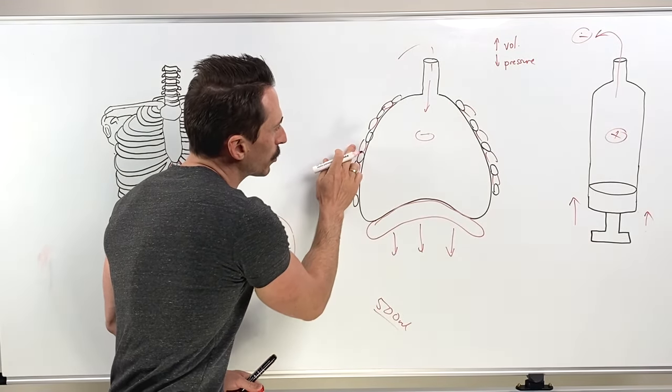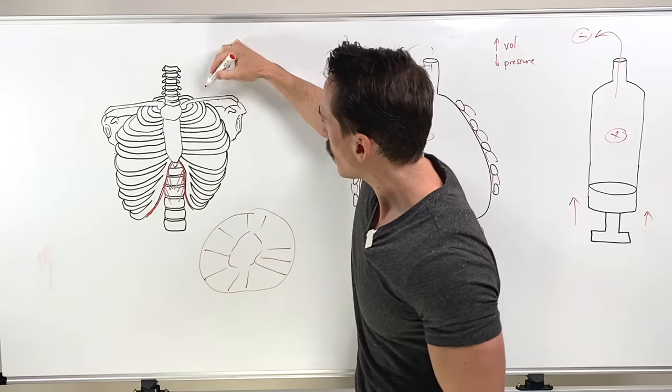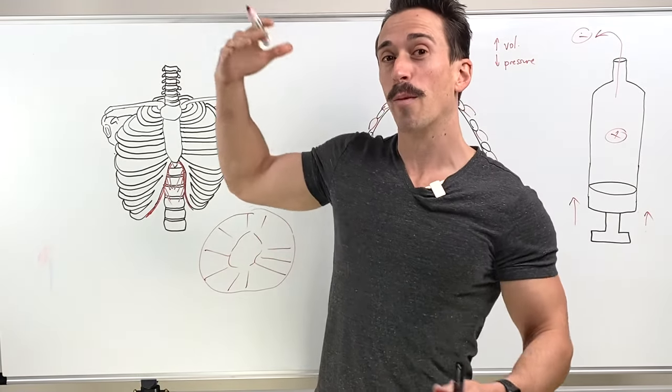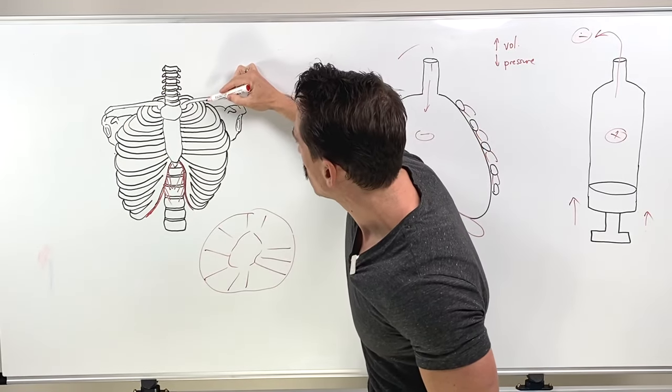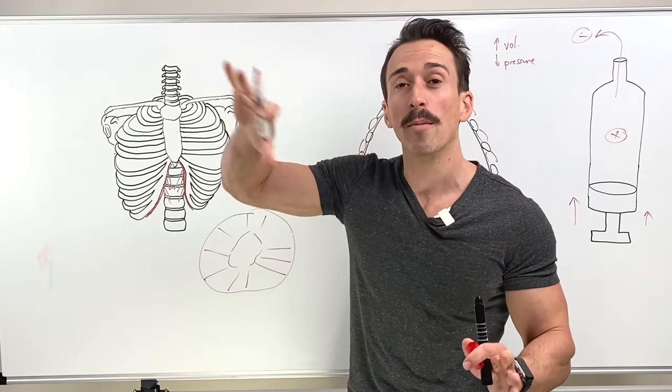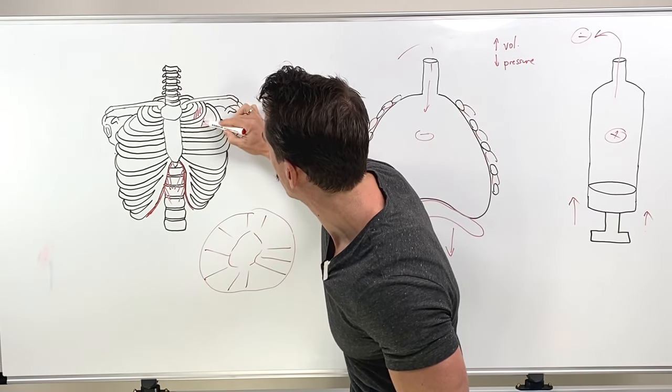Now, these external intercostal muscles here, their origin is at the bottom rib and its insertion is at the rib above it. And they're called external intercostals. The fibers orientate up and out.